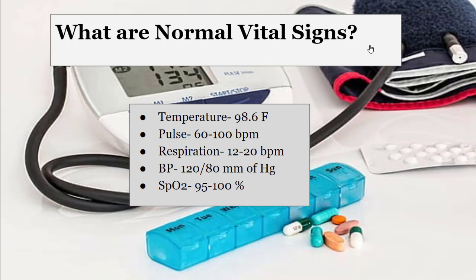What are normal vital signs? Vital signs are temperature, pulse, respiration, BP, and SpO2. The normal temperature is 98.6°F. The normal pulse is 60 to 100 beats per minute. If it is less than 60, it is bradycardia. If the pulse is more than 100, it is called tachycardia.